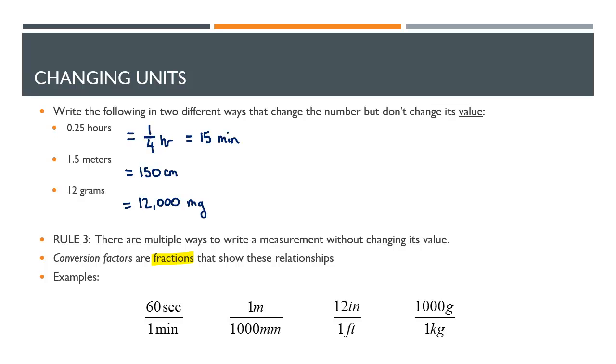Now let's just pull this one aside here. 12 inches over 1 foot equals 1. I could also write that as 1 foot over 12 inches if I wanted to. That also equals 1. These conversion factors can be flipped around if you need to cancel something that's on the other side of it.